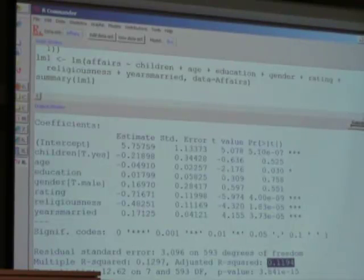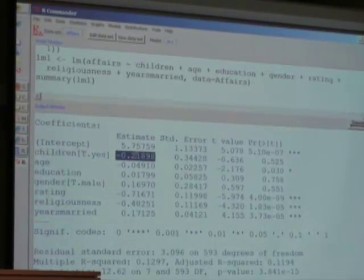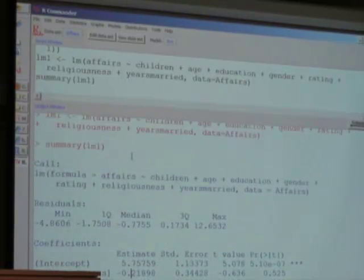We get a half-decent fit of 11.9 or 12 percent. The model tells us that households with children, individuals who have kids, would have 0.2 fewer affairs than those who have no kids. This is counterintuitive, right? This is actually not counterintuitive. This is different from what we have here.